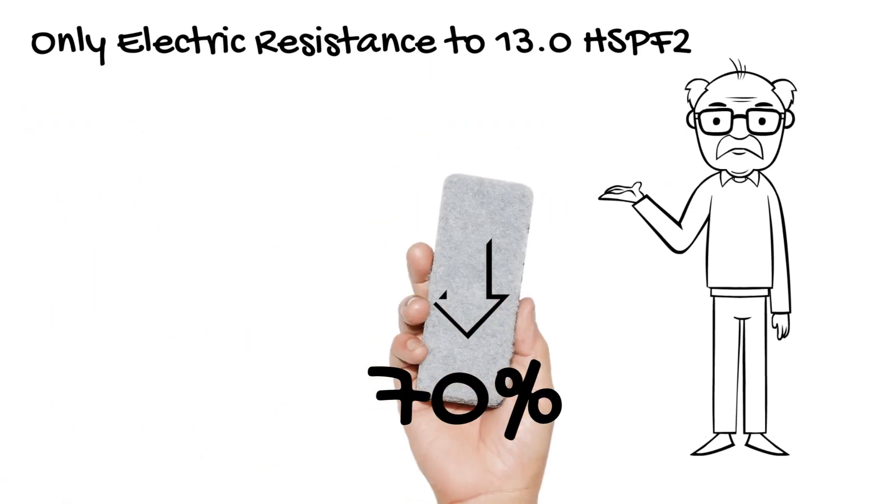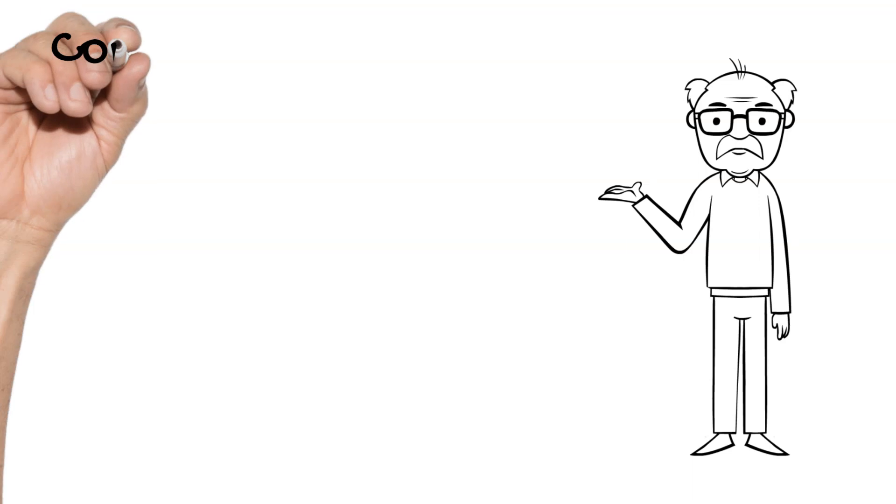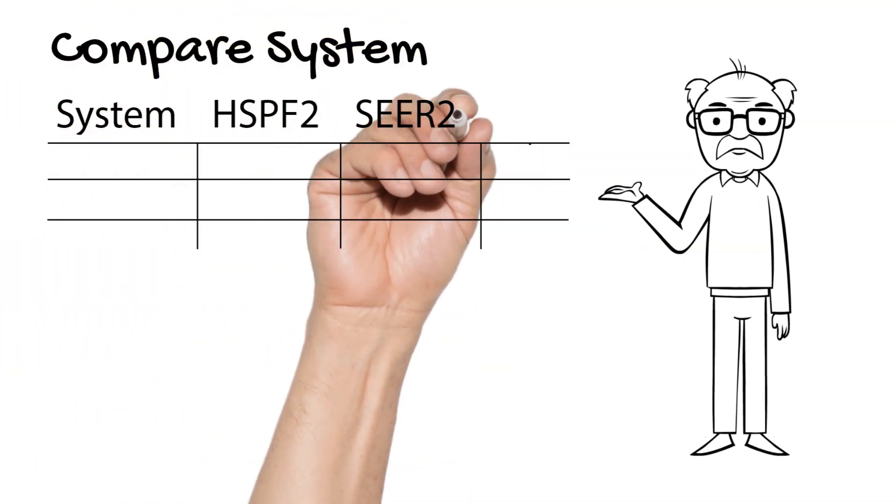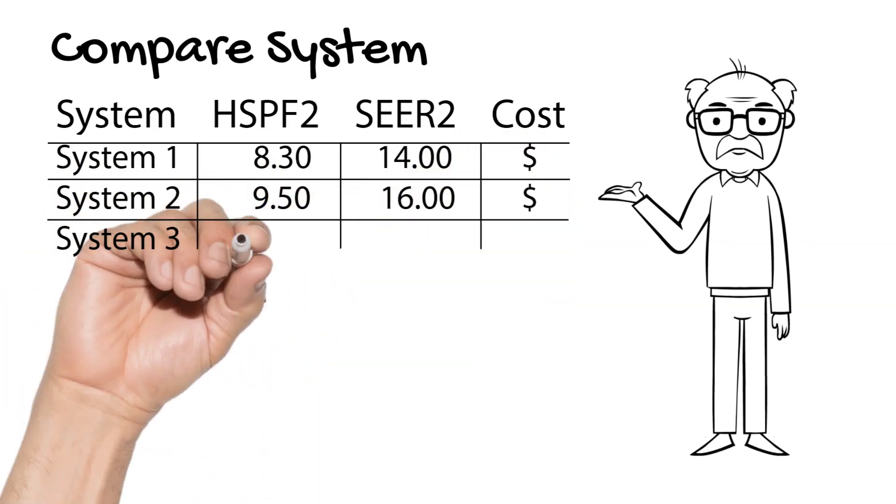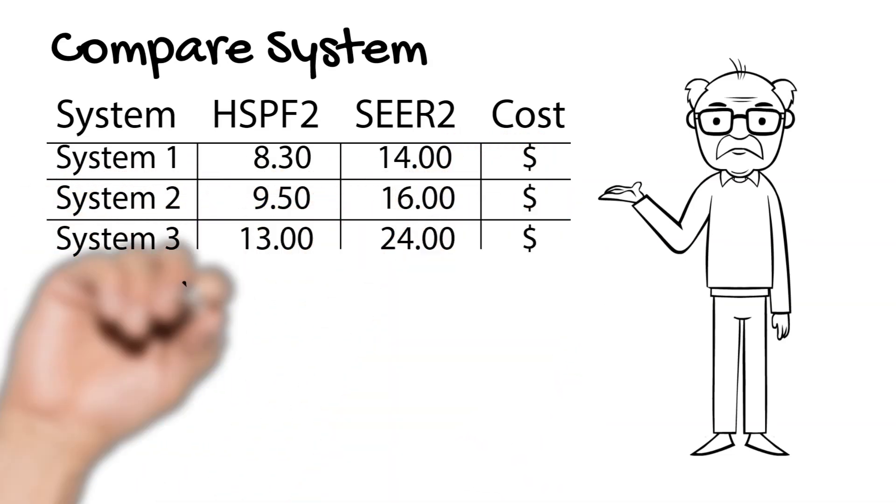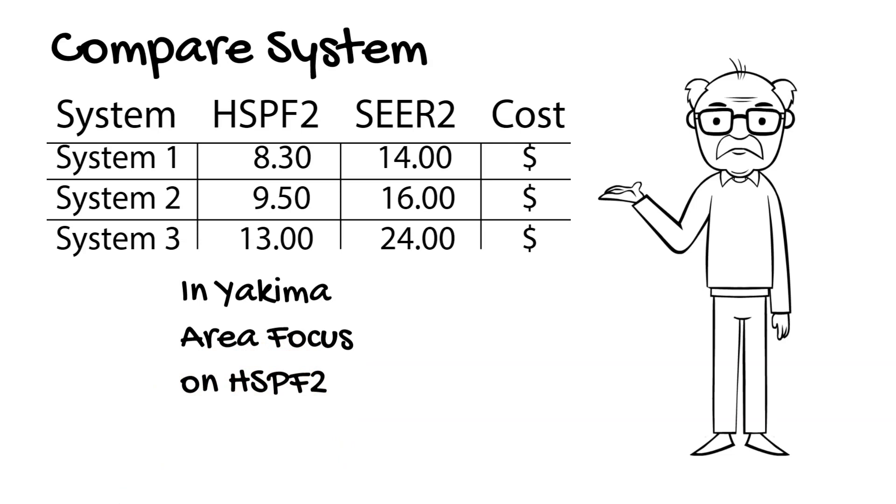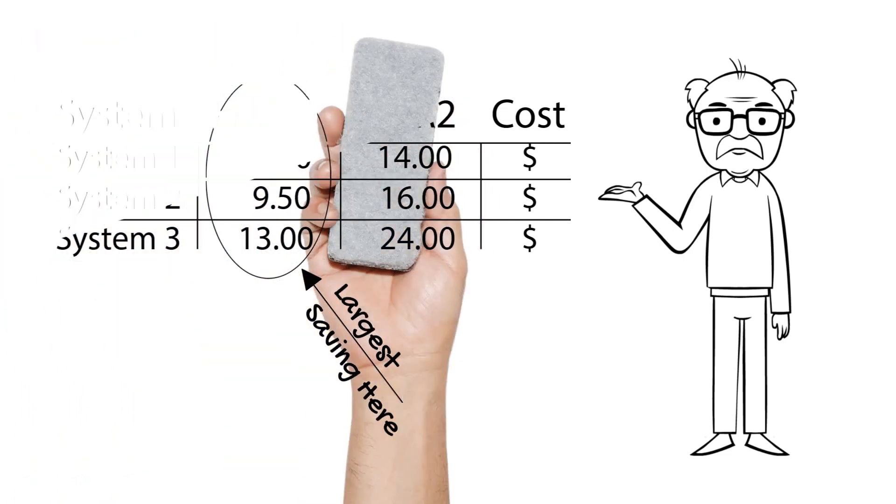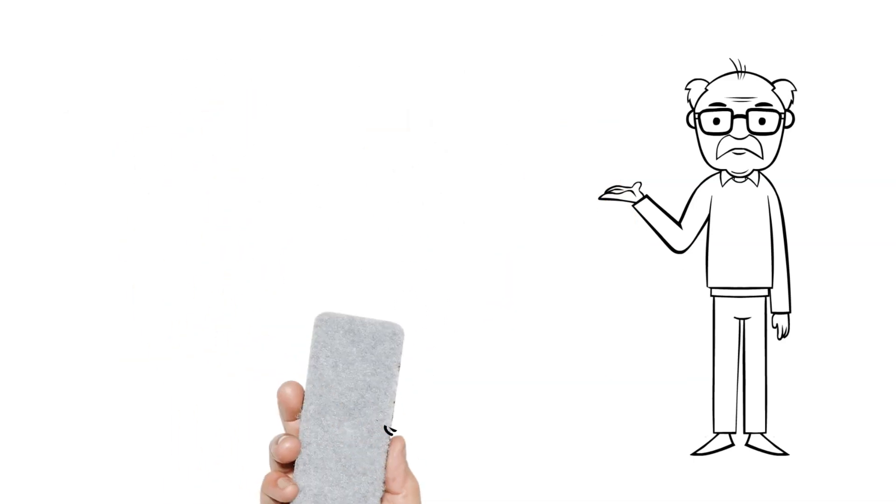What is the takeaway? To save operation cost, we need to compare the SEER2 and HSPF2 of the systems we are considering purchasing. Principally, here in Yakima, we need to primarily look at the HSPF2 because this is where the larger savings are to be gained. Buy the system with highest HSPF2 you can comfortably afford.